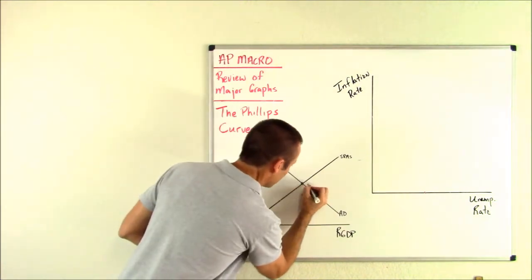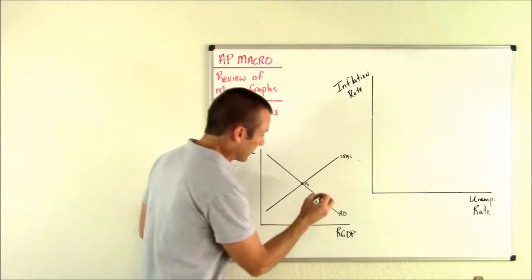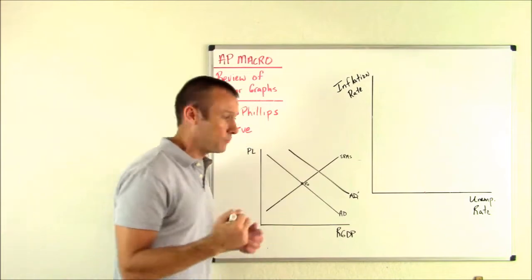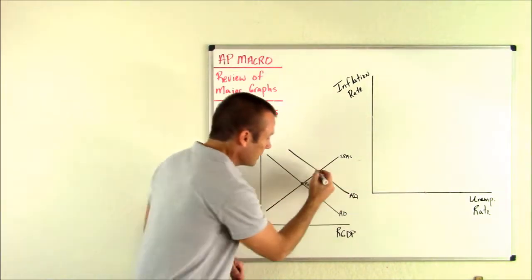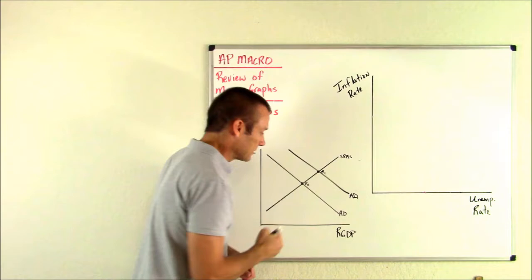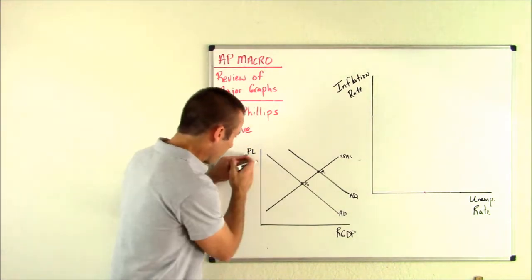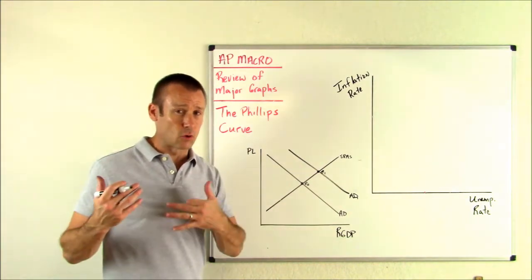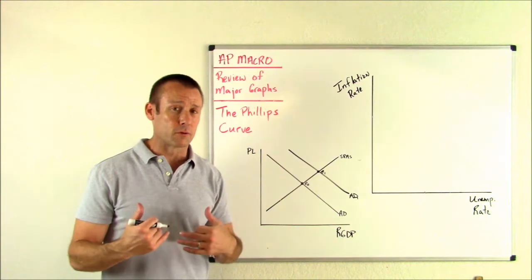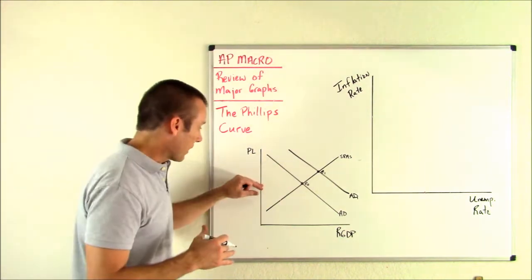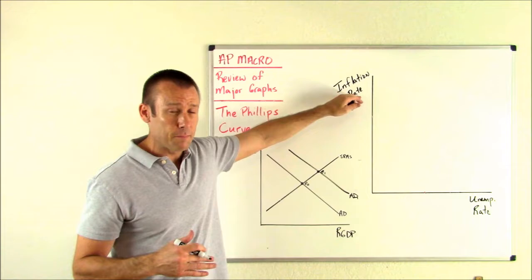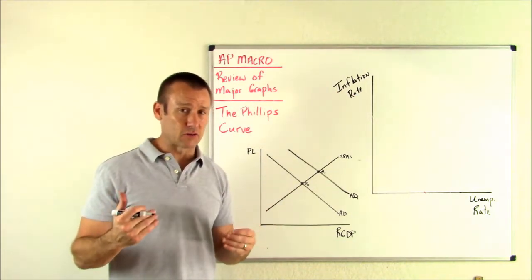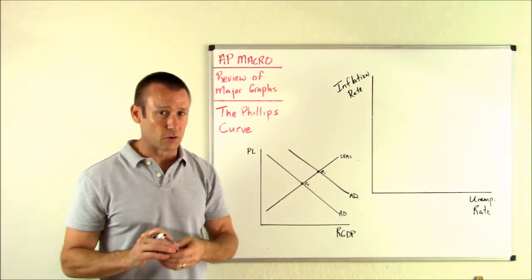Let's say this is E-sub-zero. Let's have a positive aggregate demand shock — AD shifts to the right to AD1, taking us to E-sub-one. The price level is going to go up, and real GDP is going to increase. When real GDP increases, the only way we produce more is to hire more workers, so the unemployment rate is going to go down. Price level goes up — we associate that with the inflation rate going up — and the unemployment rate goes down. It's an inverse relationship.